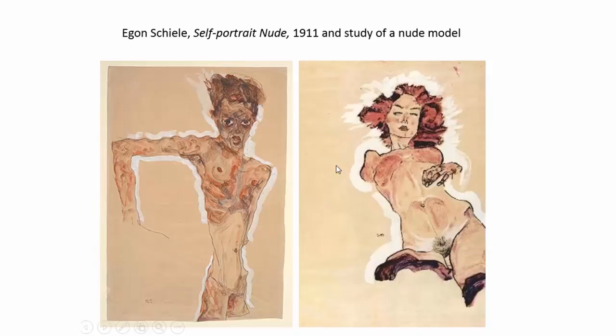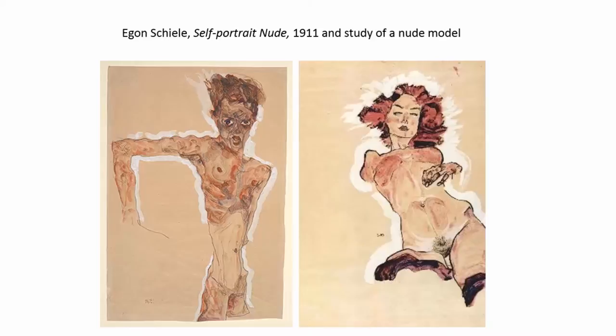Egon Schiele was an Austrian painter known for these gouache-type drawings that combine drawing and painting. He is a good example of Viennese Austrian art. He was a student of Gustav Klimt, who made really decorative, beautiful paintings — often of women. The Kiss is very well known: a gorgeous, tender study with a lot of gold and decorative elements. Klimt was incredibly successful, and he took Egon Schiele under his wing.